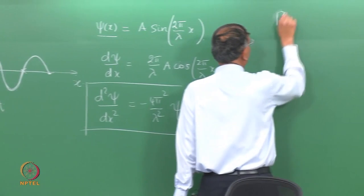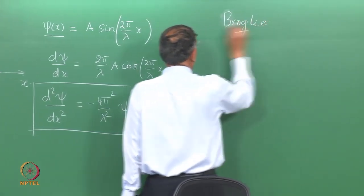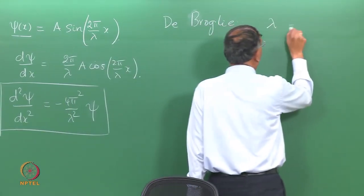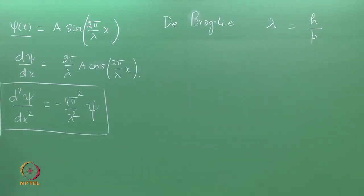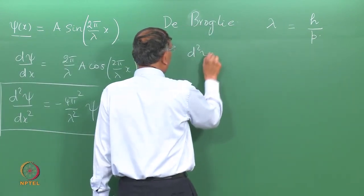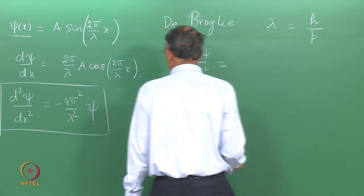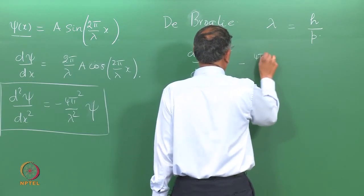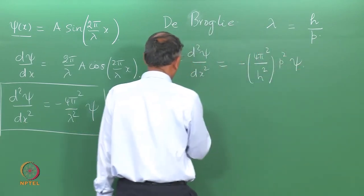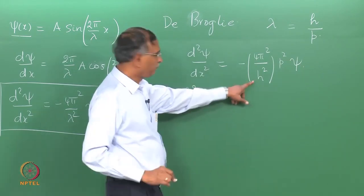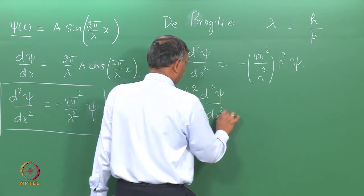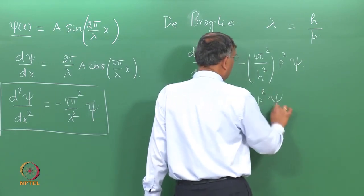Recalling de Broglie's result from the earlier lecture, lambda is expressed in terms of the momentum of the particle. If we write the wave equation, d²(psi)/dx² = −(4π²/h²) · p² · psi, or equivalently, using h-bar where h-bar = h/2π, we get: −h-bar² · d²(psi)/dx² = p² · psi.